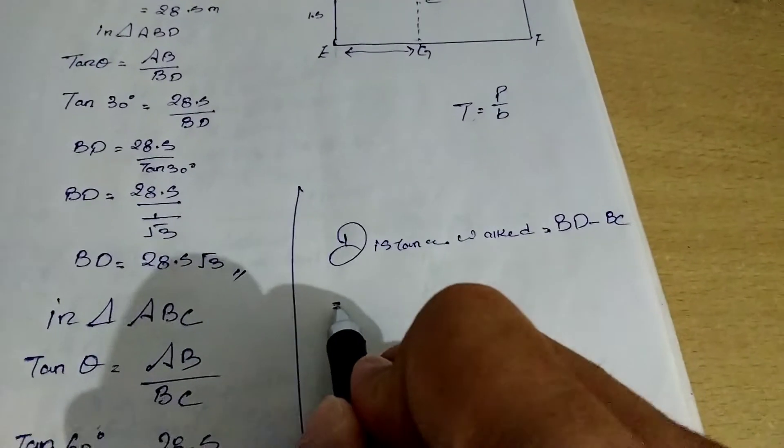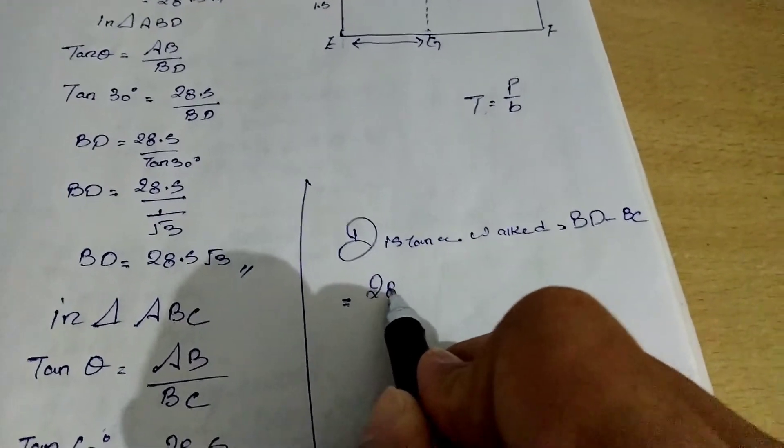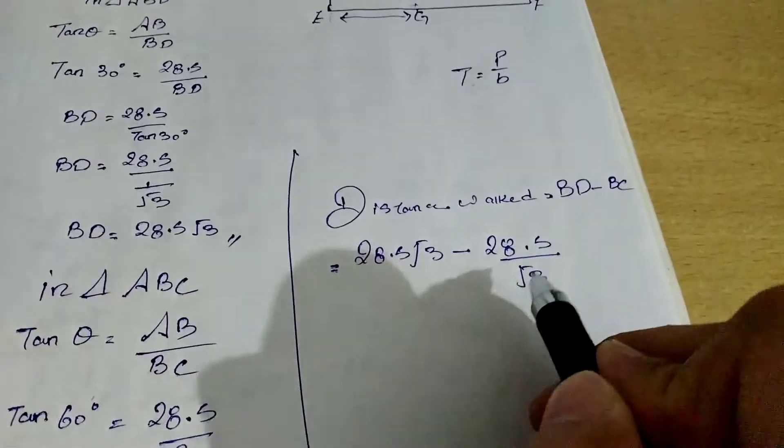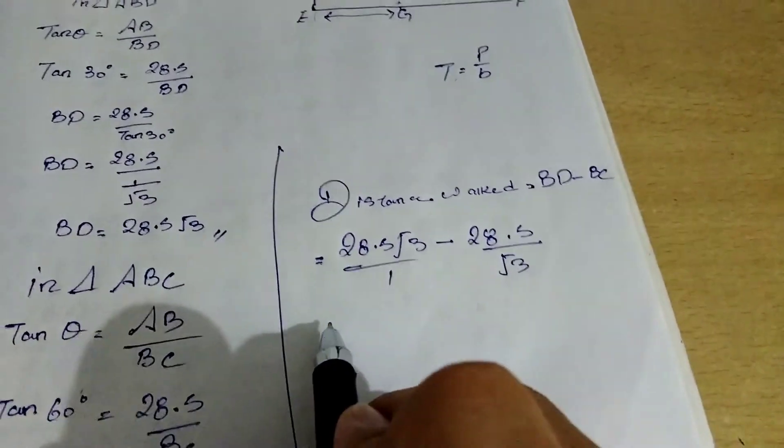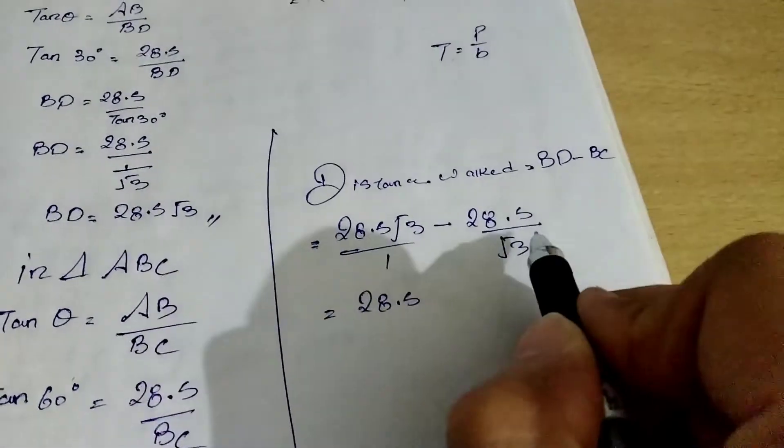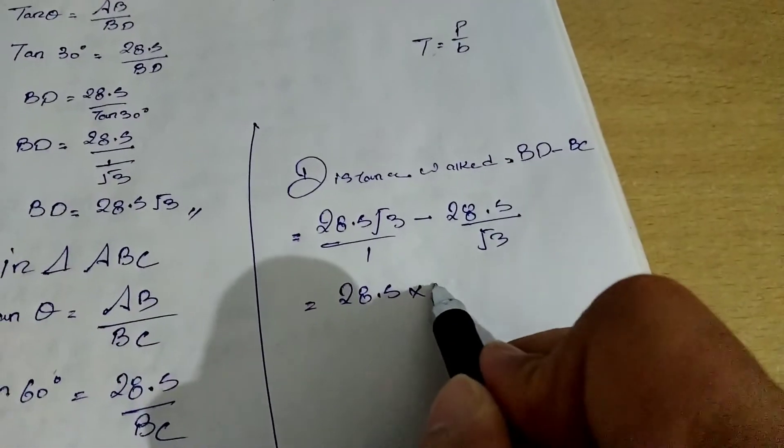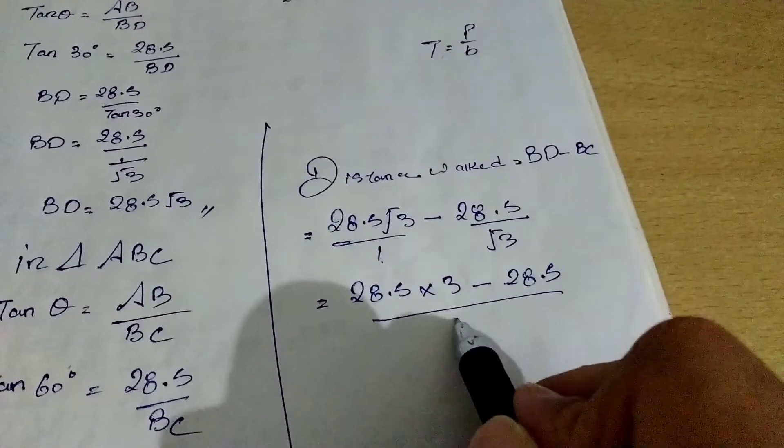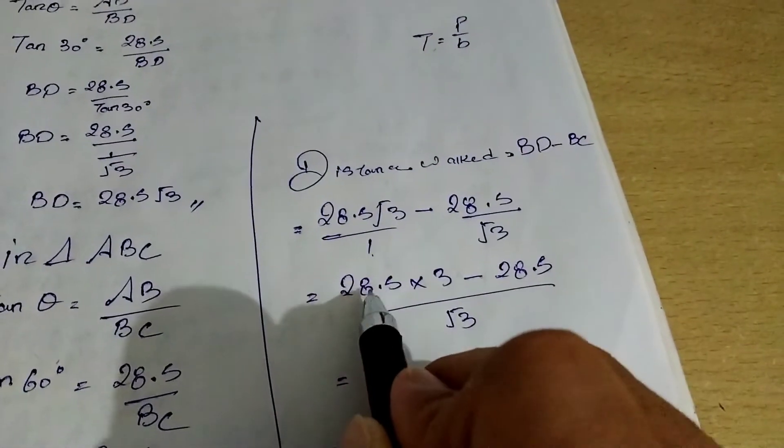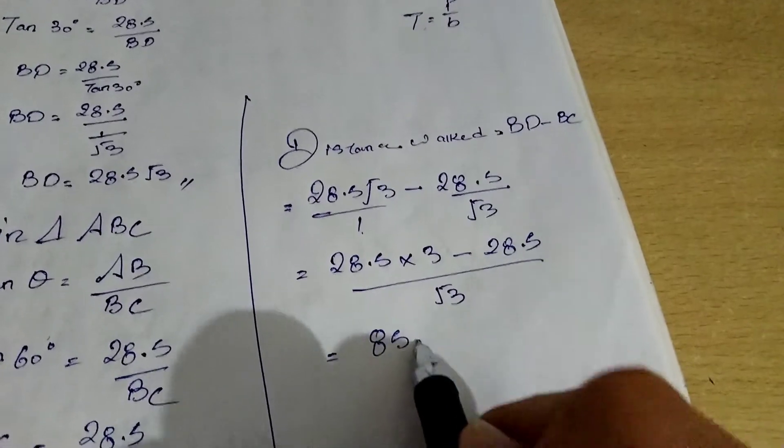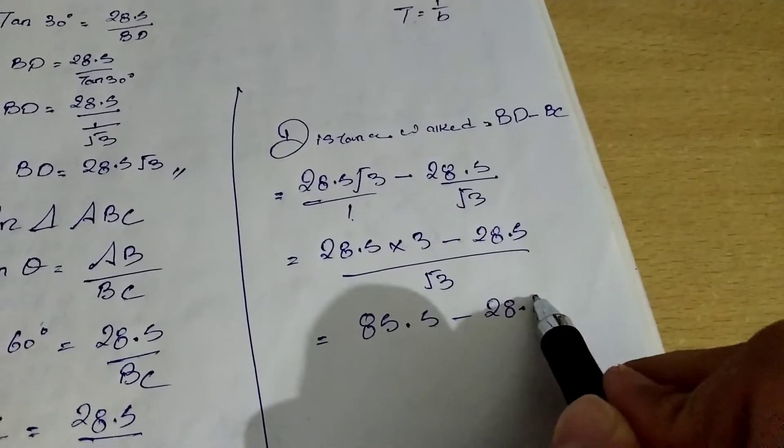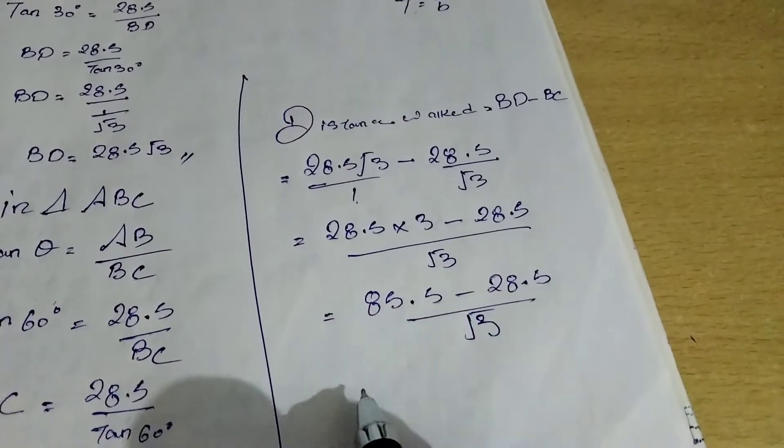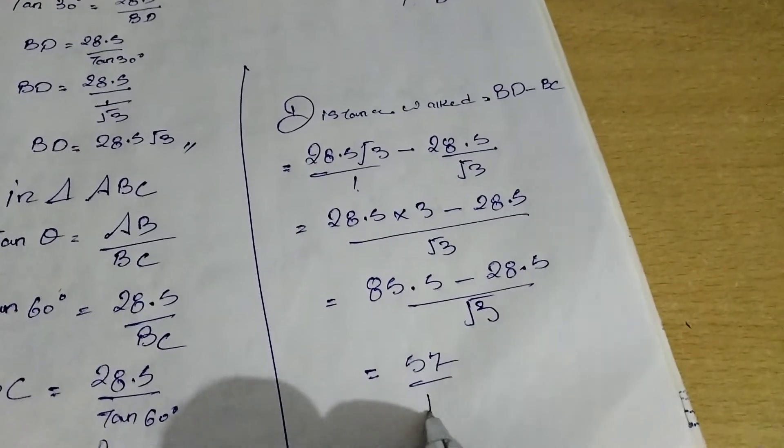So what we got BD, we got as 28.5 root 3 minus BC, we got 28.5 by root 3. Now there is no denominator here, I'll just give it 1. Next line, 28.5 multiply with root 3, root 3 by root 3 is 3 minus 1 into 28.5. So if you multiply 28.5 root 3, you get 85.5 minus 28.5 by root 3. Now if you minus 85.5 with 28.5, the number that you will get is 57 by root 3.